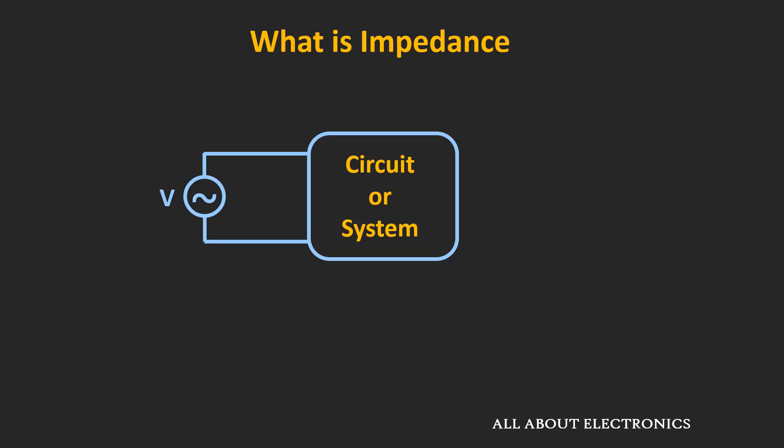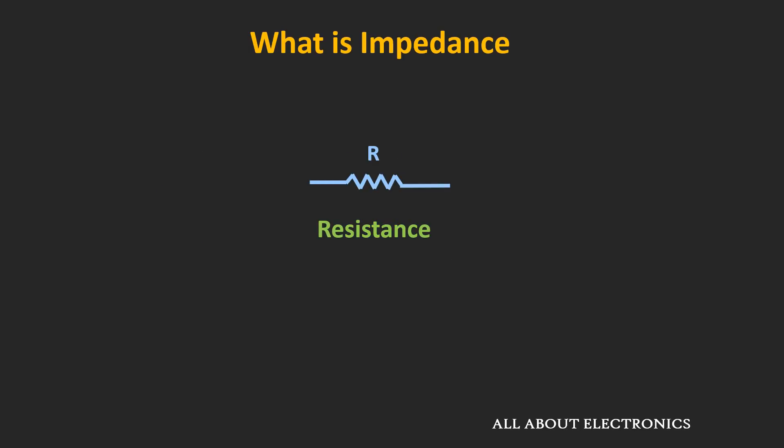In a simple way, impedance is the measure of opposition to the flow of current that is presented by the circuit or the network whenever a voltage signal is applied. This impedance is a more relevant term whenever the applied input signal is an AC sinusoidal signal. In a way, this impedance is similar to resistance, which also implies the opposition to the flow of current.